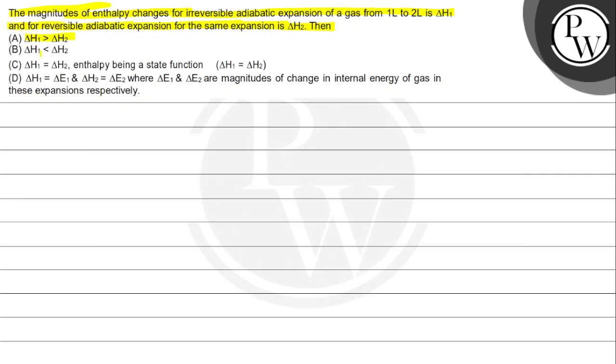Option A: ΔH₁ is greater than ΔH₂. Option B: ΔH₁ is less than ΔH₂. Option C: ΔH₁ is equal to ΔH₂, enthalpy being a state function, ΔH₁ equals ΔH₂.